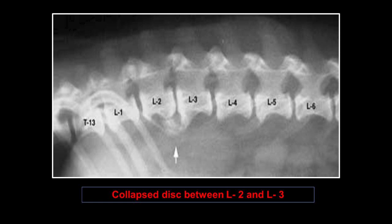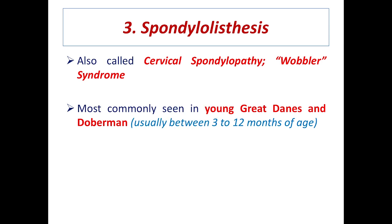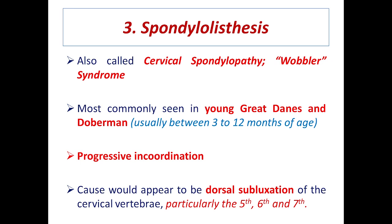Spondylolisthesis, also called cervical spondylopathy or wobbler disease or wobbler syndrome, is most commonly seen in young Great Danes and Dobermans, usually between 3 to 12 months of age. There is definite progressive incoordination because of dorsal subluxation of the cervical vertebrae, particularly at C5, C6, and C7.